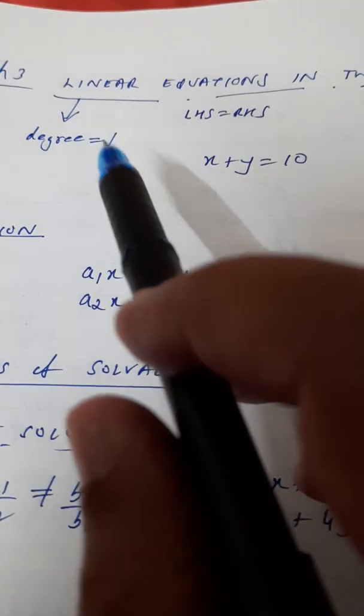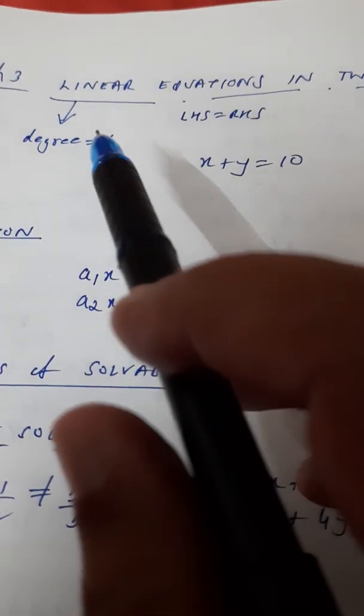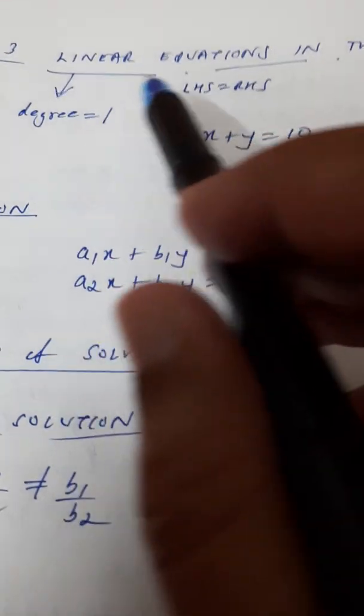The power should be 1, not 2, 3, 4. Then it becomes quadratic or cubic. So, we are doing at the moment linear equation.